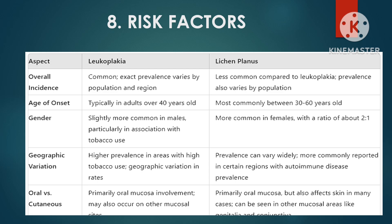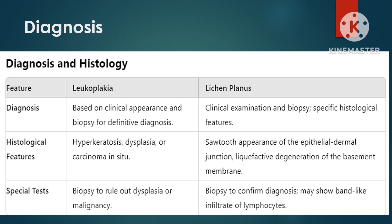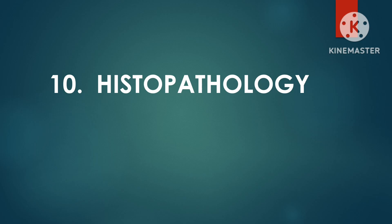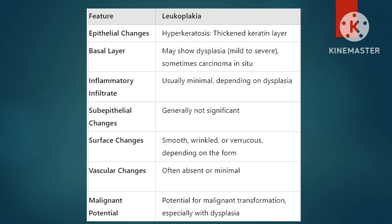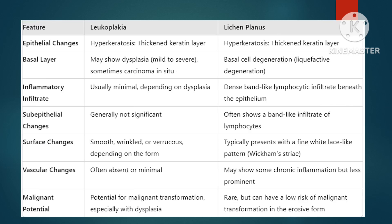When it comes to diagnosis, leukoplakia is evaluated based on clinical appearance and often requires a biopsy to rule out dysplasia or malignancy. Histologically, it may show hyperkeratosis or even cancerous changes, with minimal or absent inflammatory infiltrate and often insignificant sub-epithelial changes. Lichen planus is also diagnosed through clinical examination and biopsy. Histopathologically, lichen planus shows hyperkeratosis as well as basal cell degeneration — also called liquefaction degeneration — creating a saw-tooth appearance. Inflammatory infiltrate is very prominent, appearing as a dense, band-like lymphocytic infiltrate just beneath the epithelium.